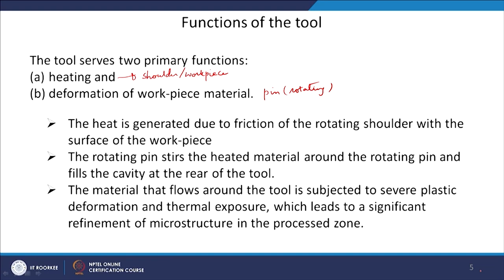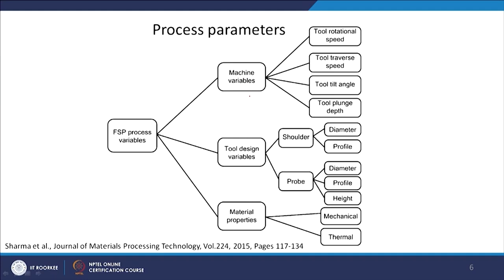The material that flows around the tool is subjected to severe plastic deformation and thermal exposure, which leads to significant refinement of microstructure in the process zone. The process parameters which affect your microstructure and properties can be categorized into three variables: machine variables, which you can change on the machine; tool design variables; and material properties — which once your material is fixed, you cannot change.